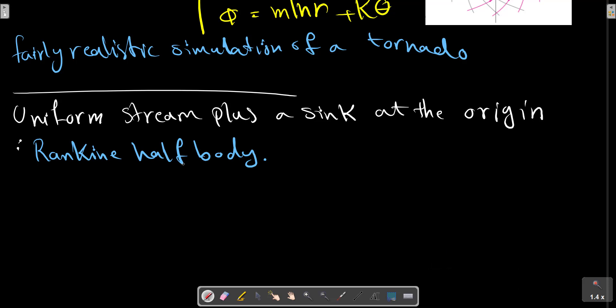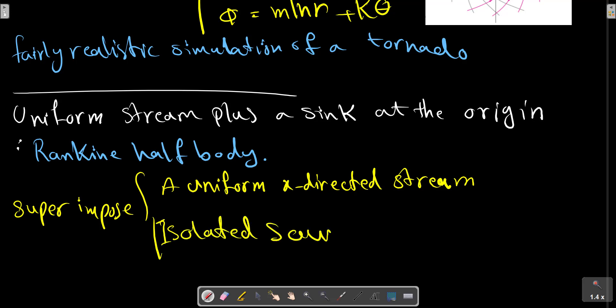If we superimpose a uniform x-directed stream against an isolated source, a half-body shape appears.